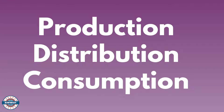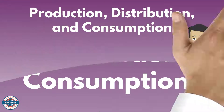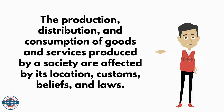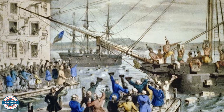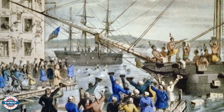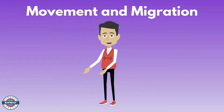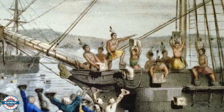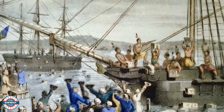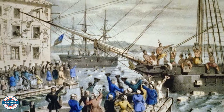We're now going to discuss the theme of production, distribution, and consumption. The production, distribution, and consumption of goods and services produced by a society are affected by the location, customs, beliefs, and laws of that society. 'No taxation without representation' was a slogan directed at King George III and the British Parliament, in response to what the Bostonians — specifically the Sons of Liberty — deemed unfair taxation on tea and how it was distributed and supplied by the British.